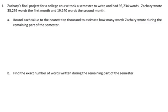So let's look at number 1 in the homework. Zachary's final project for a college course took a semester to write and had 95,234 words. Zachary wrote 35,295 words the first month and 19,240 words the second month. Round each value to the nearest 10,000 to estimate how many words Zachary wrote during the remaining part of the semester.